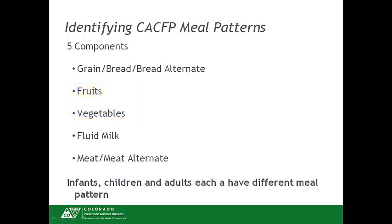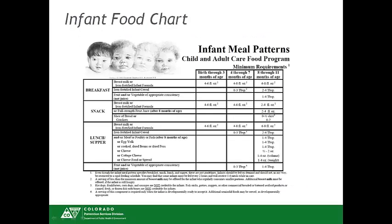Meals served and claimed for reimbursement for infants, children, and adults must contain all the required components and the minimum amounts specified on the meal pattern chart for each age group at each meal and snack. Infants, children, and adults have slightly different meal pattern charts. We will review each meal pattern chart starting with infants. The infant meal pattern reflects the minimum requirements with regard to types of foods and quantities of food according to age and development.